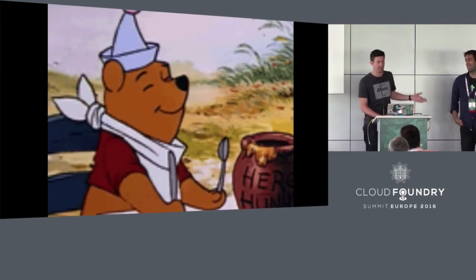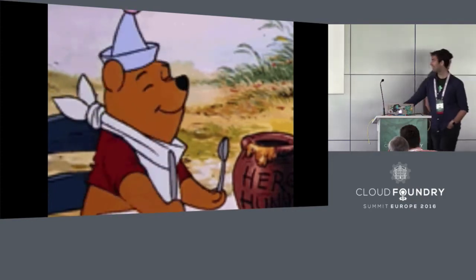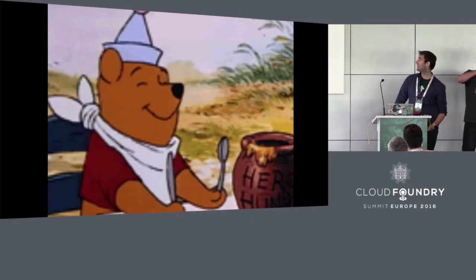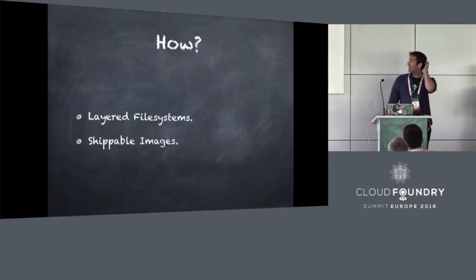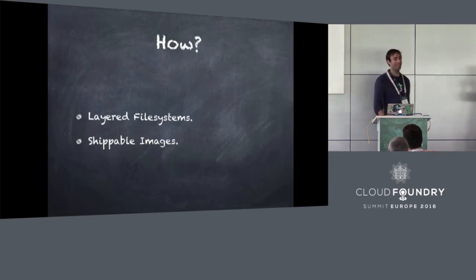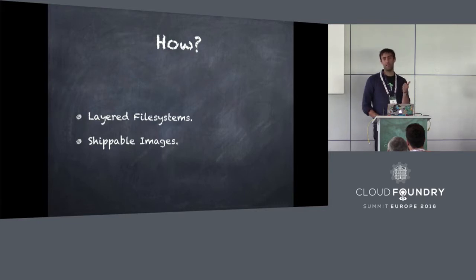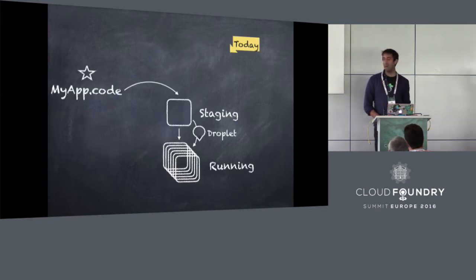I'm going to hand over to Jules and he's going to tell you a bit about how this would work and what it would look like. So how do we actually make this work? Basically what it comes down to is two things: it's layered file systems, which I'll talk about, and it's a shippable image standard, which I'll talk about. But first, we need to talk about how it works today.